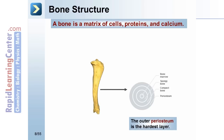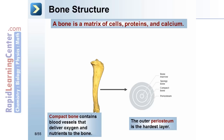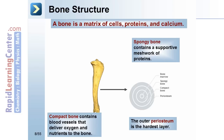The outer periosteum is the hardest layer. Going from the inside to the outside of the bone, you have bone marrow, spongy bone, compact bone, and periosteum. Compact bone contains blood vessels that deliver oxygen and nutrients to the bone. Spongy bone contains a supportive meshwork of proteins.